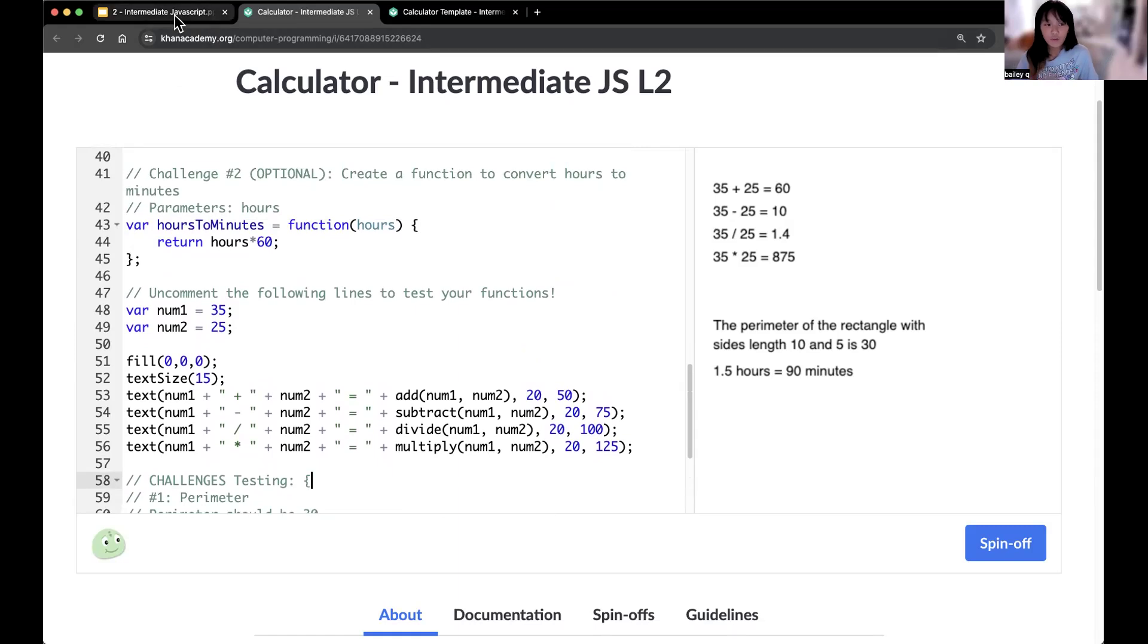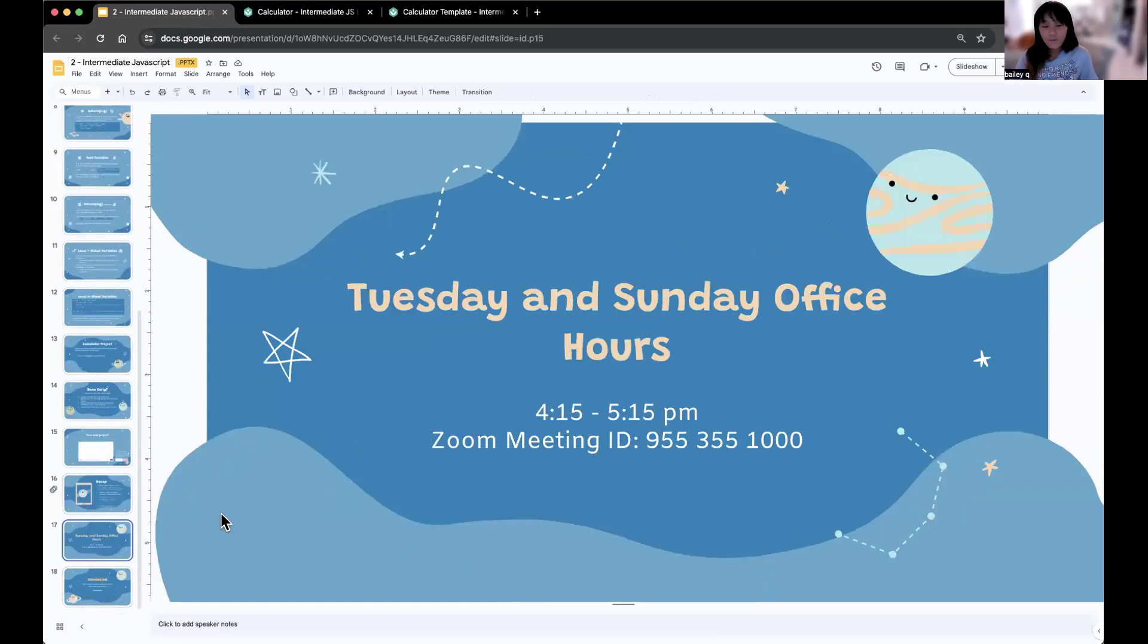If you have any questions with your project, if there's any syntax issues, I would recommend trying to go through your project with the Oh Nos Error Buddy. He genuinely gives pretty good tips. Otherwise, if you have any questions, double check with your teacher, either next time you go to class or go to office hours, which are 4:15 to 5:15 PM on Tuesdays and Sundays. They are drop in. So show up at any time. Then our Zoom meeting is 955-355-1000. You will also get this in an email or a message from the senior mentor of your class.